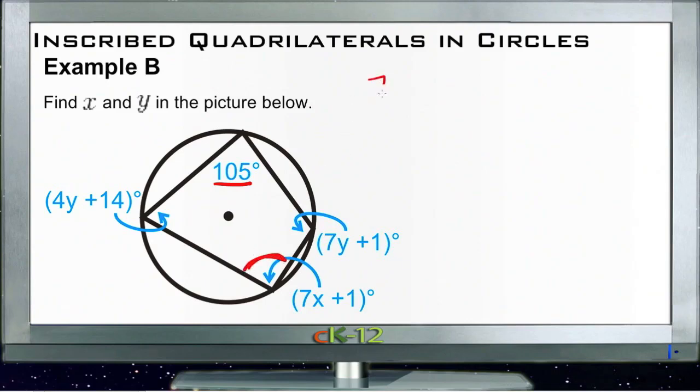So we know that 7x plus 1 plus 105 equals 180. Those are two opposite angles in an inscribed quadrilateral. So we'll subtract 105 from both sides.